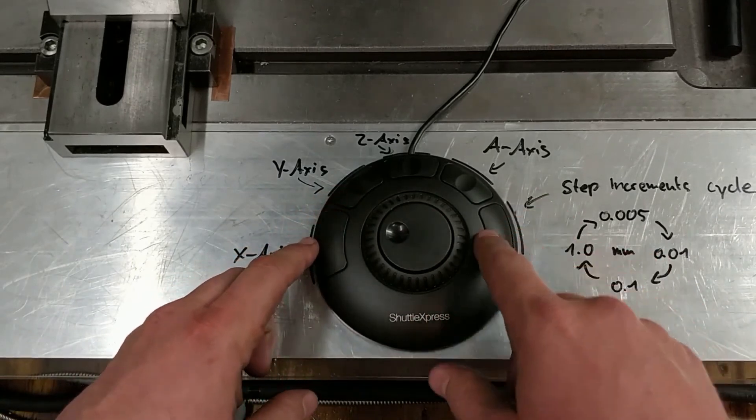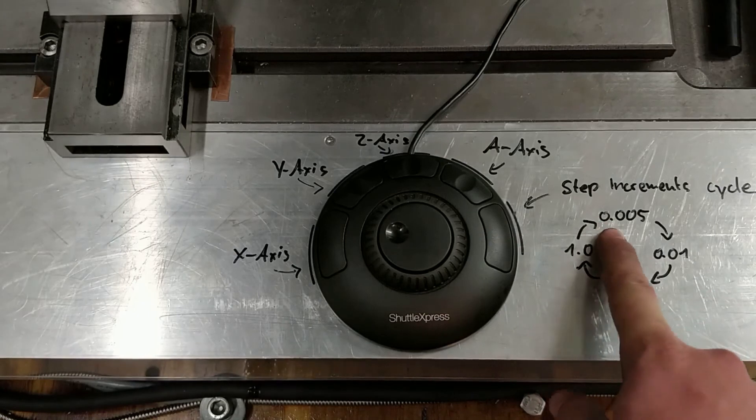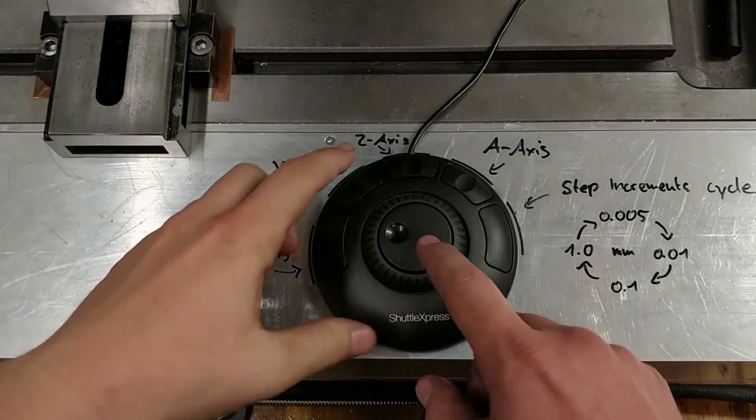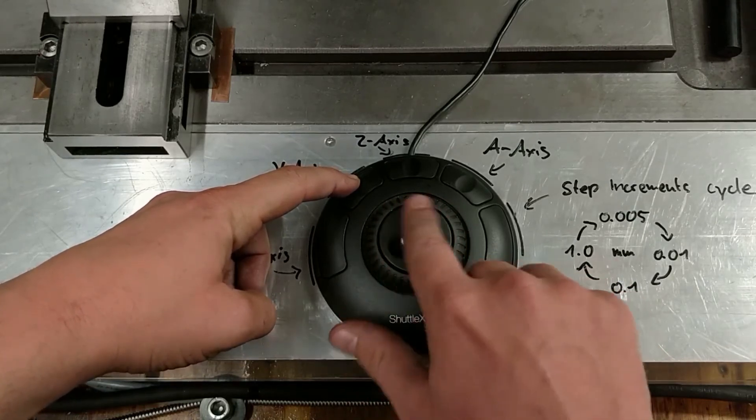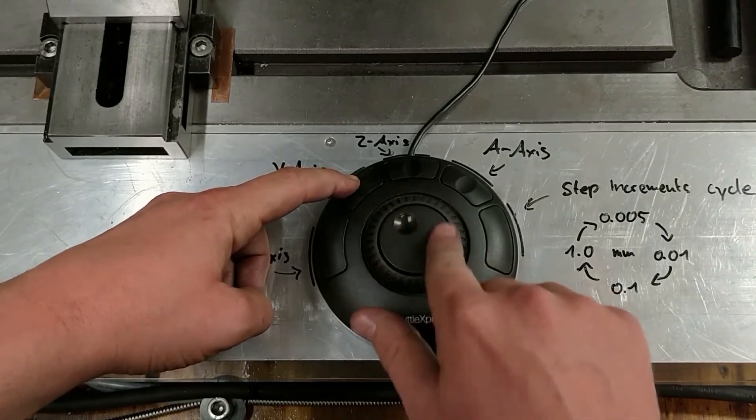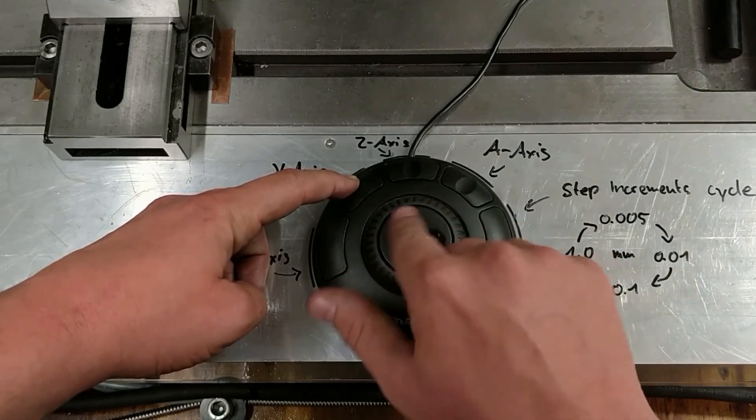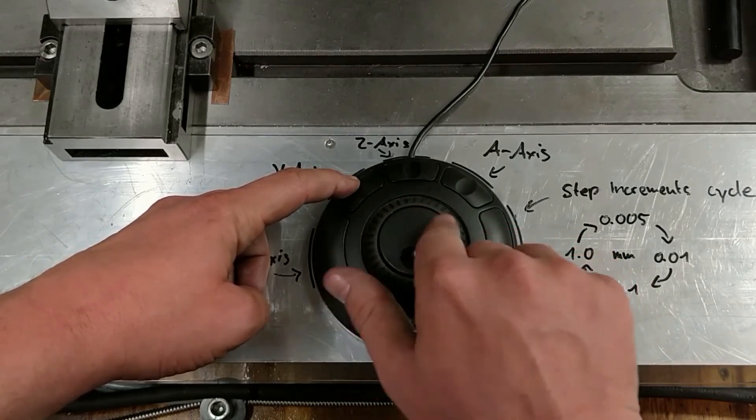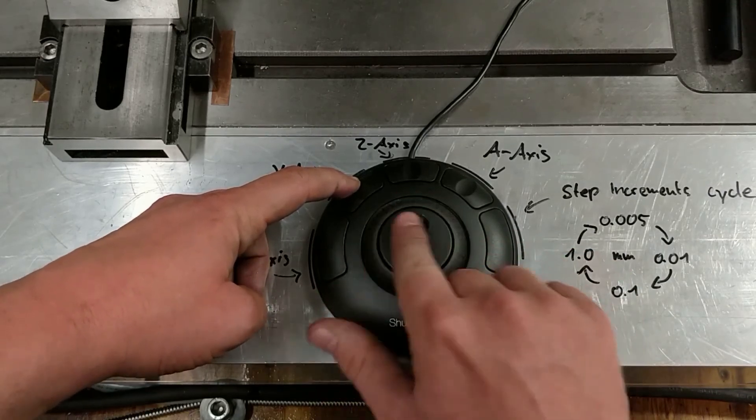And if you hit the button again, we are back at 0.005. And now if I move this axis, it's very silent but I think you can hear it. I don't think you can see it. We are moving really, really slow.